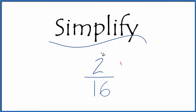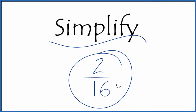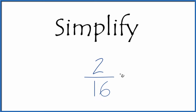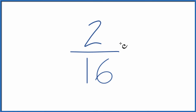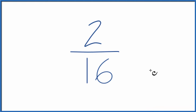Let's simplify the fraction 2/16. We're trying to find another fraction that's equivalent to 2 divided by 16 — one that has the same value, just reduced to lowest terms. To do that, we need to find a common factor, something that goes into both 2 and 16 evenly. Since 2 times 8 is 16, we can use 2 as our common factor.